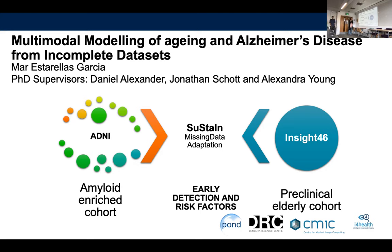I use missing data adaptation because of the multimodal modeling — there is a lot of missing data, so I adapt the model to deal with it. My question here is: if we find heterogeneity in Insight 46, which is a preclinical cohort, can we identify who is on an amyloid-driven disease process? And by comparing this with the same modeling in ADNI, can we see how these people are going to develop in the future?